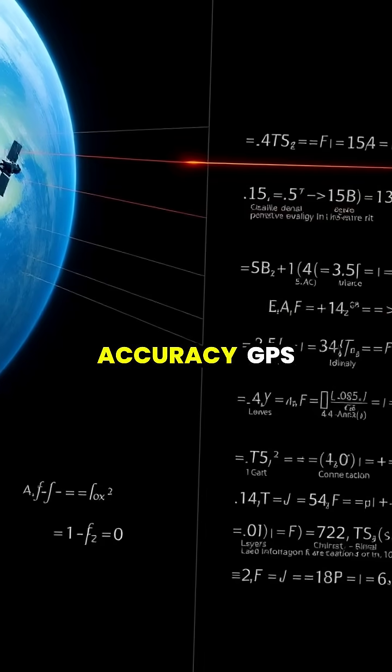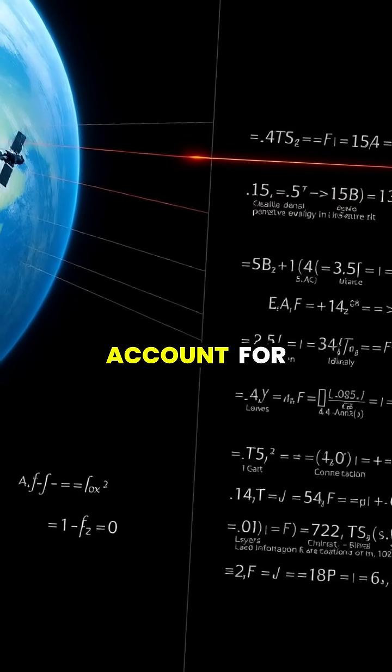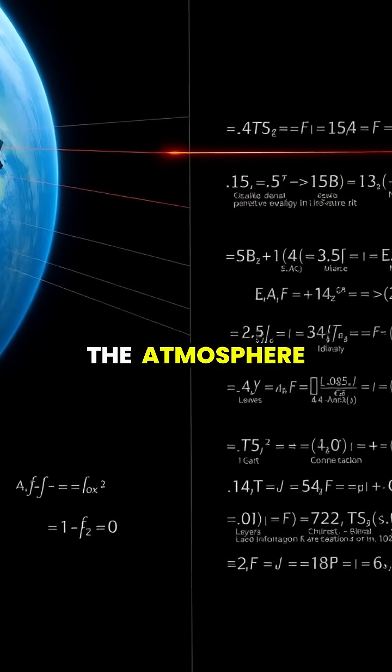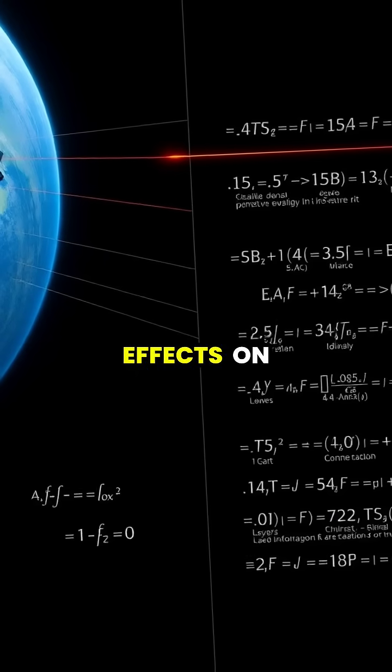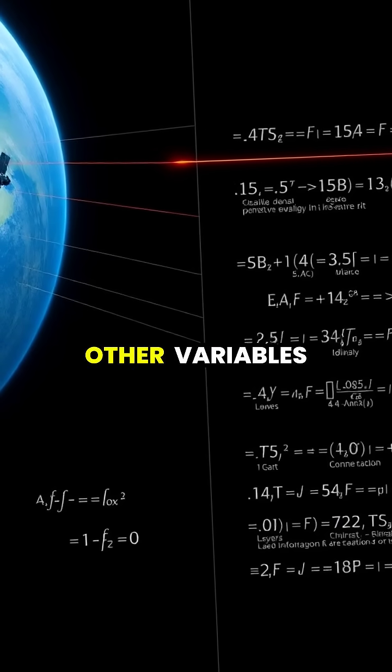For greater accuracy, GPS systems must account for signal delays caused by the atmosphere, temperature, Earth's gravitational effects on time, and other variables.